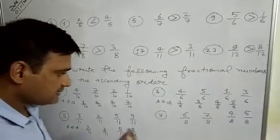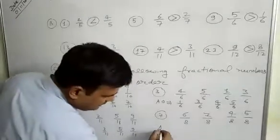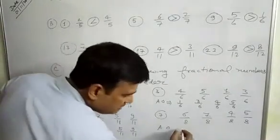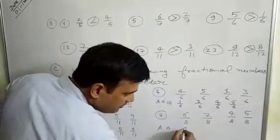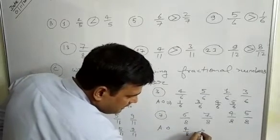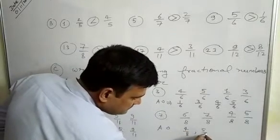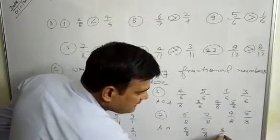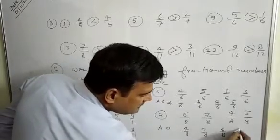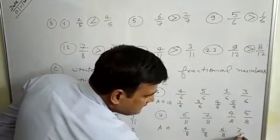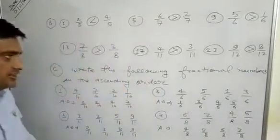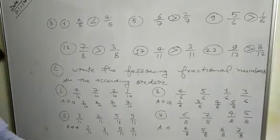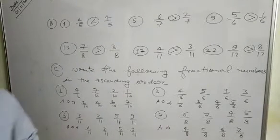The numerators in ascending order are 2, 3, 5, 9. In question 7, ascending order: first we write the smallest number, 4 by 8, then 5 by 8, then 6 by 8, then 7 by 8. In this way, we write the fractions in ascending order.